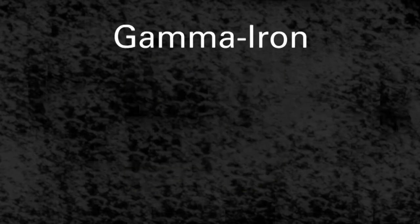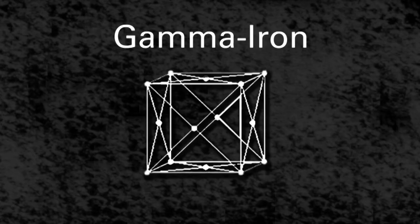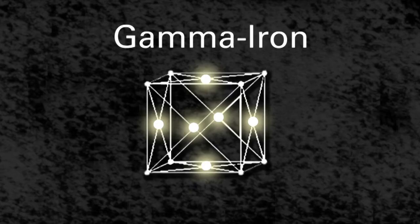Another allotrope of iron has a face-centered cubic structure. In this structure, there is an iron atom at each face of the cube.